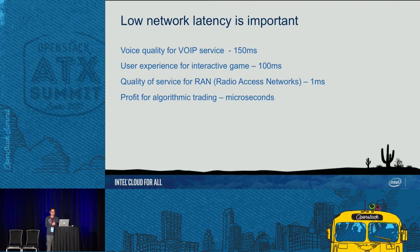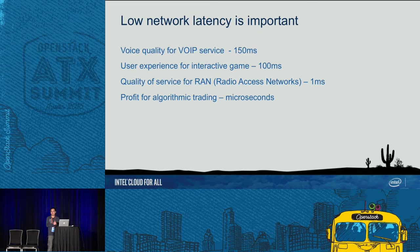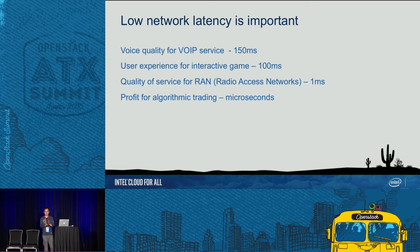Latency is really important, and I want to emphasize that we are talking about end-to-end latency. For example, in a VoIP service, when person A calls person B, several network function nodes are involved — maybe two compute nodes, some edge routers, and a core router. The end-to-end latency across all five machines should be less than 150 milliseconds, meaning each node may only have a budget of less than 30 milliseconds. Latency and throughput are related but are generally two separate dimensions of network performance.